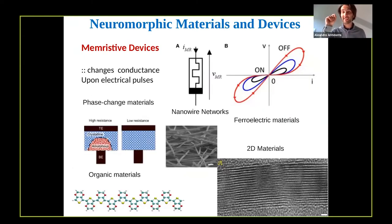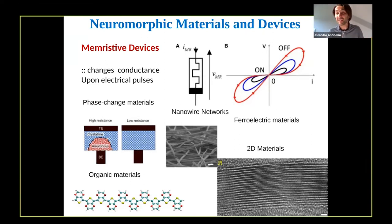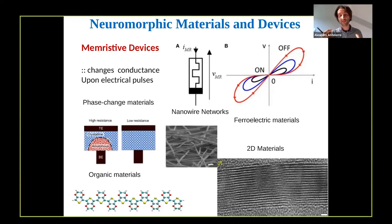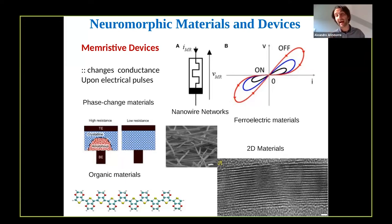Neuromorphic computing is an alternative to the classical von Neumann architectures of our computers, which are based on CMOS technology. Neuromorphic computing carries along very useful advantages like large-scale integration, much less power consumption, and it allows for computation based not only on digital signals but also on analog ones and a mix of the two. The core device of a neuromorphic circuit is a memristor.